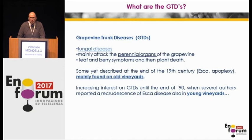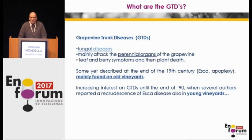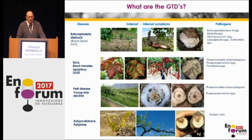Let's first introduce the concept of GTDs. The grapevine trunk diseases are fungal diseases caused by pathogens which, taxonomically speaking, are very different, but which all share the feature of attacking and colonizing the trunk of the vines. Some have been known for a long time, including ESCA. They were specifically linked to pathologies of vines at the end of their productive cycle. Then new diseases came into the picture, extending to vineyards that had been recently planted.